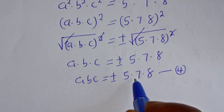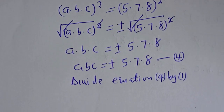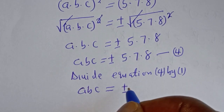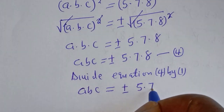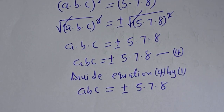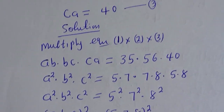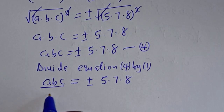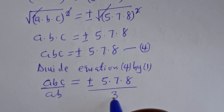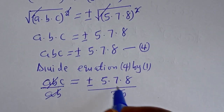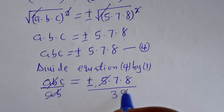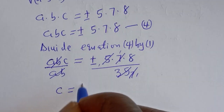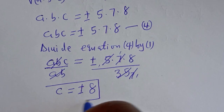Now let's divide equation 4 by equation 1. Equation 4 is ABC equal to plus or minus 5 multiplied by 7 multiplied by 8, and equation 1 is AB equal to 35. Dividing, AB cancels, 5 and 5 cancel, 7 and 7 cancel. Therefore C is equal to plus or minus 8. This is the value of C.